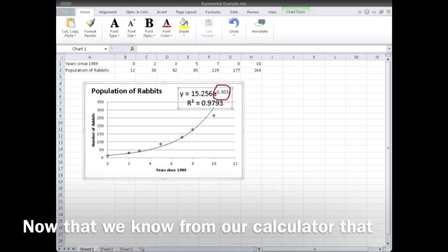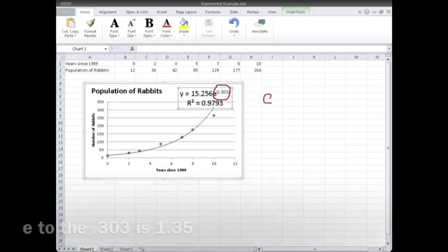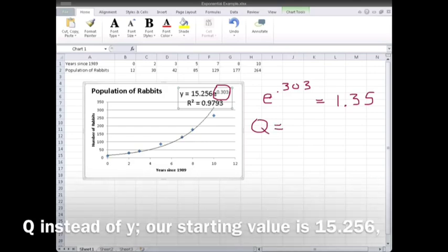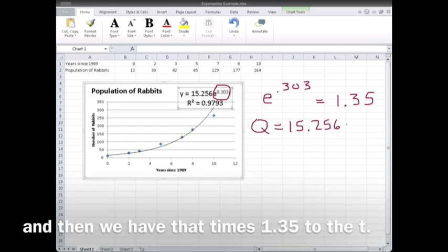Now that we know from our calculator that e to the .303 is 1.35, we can rewrite the model in Q form. Q instead of y, our starting value is 15.256, and then we have that times 1.35 to the t.